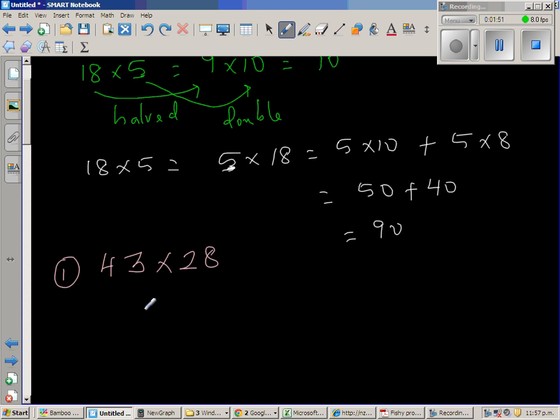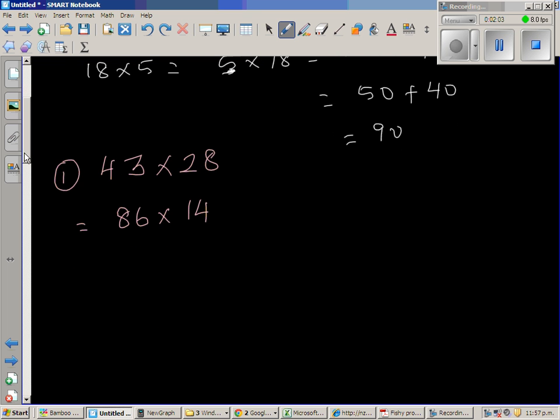I'm going to double this. Double of 43 is 86. So if you double this, you have to halve this. This is 86 times 14. Now again I'm going to double this. So I don't know double of this. 80 plus 80, so 80 times 2 is 160 and 6 times 2 is 12. So this is 172. So if you double this, that is 172 times 7.